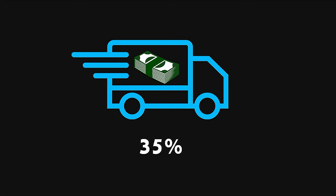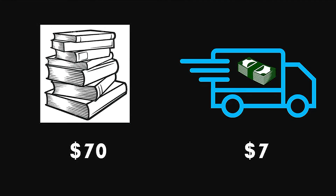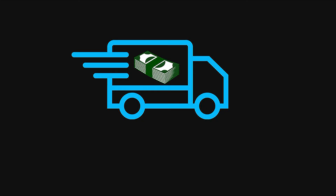Now let's say that you have decided to buy seven books. That would be $70 and the delivery cost is still $7, so the total would be $77. In this case, the delivery cost is only 10% of the total amount spent on the books.